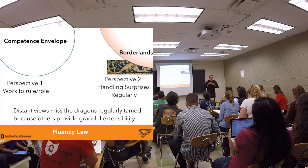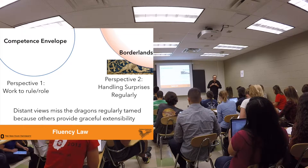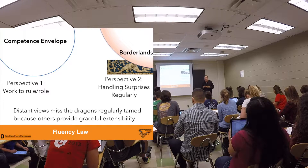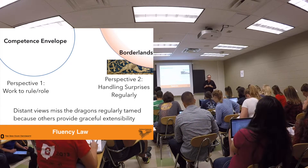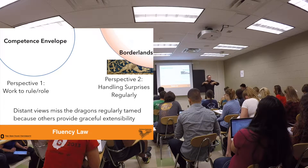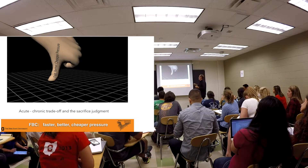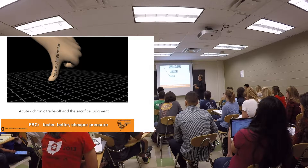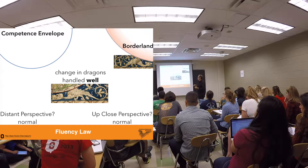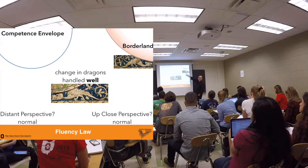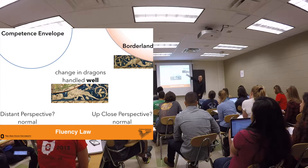Because others provide the graceful extensibility regularly. And this is a story we see over and over again. When we don't design in graceful extensibility, it turns out we still have to get it. Where do we get it from? Some people provide it — because people can be the source of graceful extensibility. If you care and you're expert, you can provide that resource. That's also called the fluency law — another thing for your glossary. The fluency law: well-adapted activity hides the difficulties handled and the dilemmas resolved.